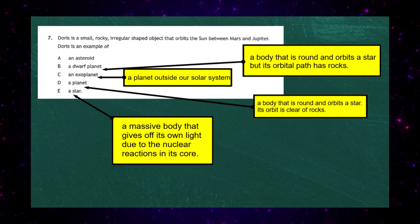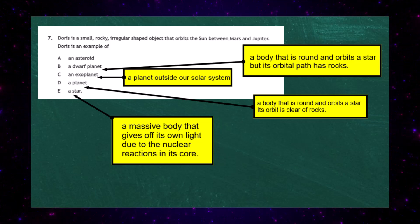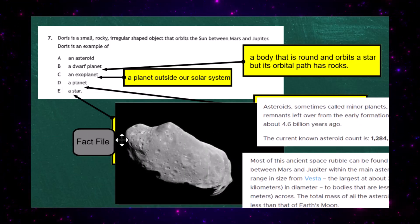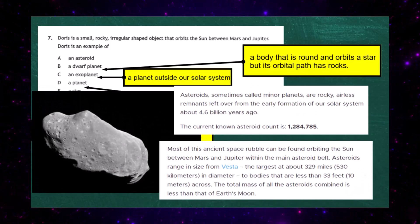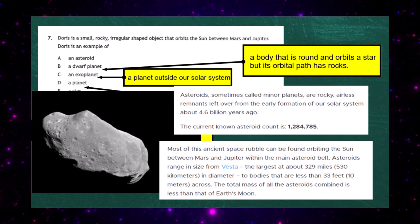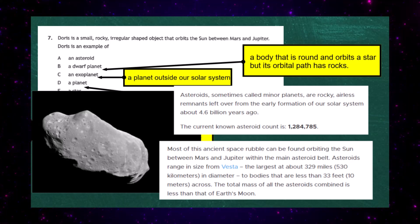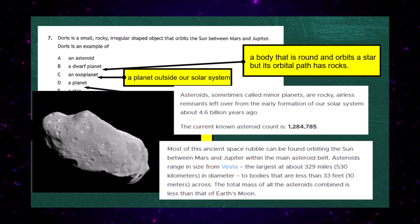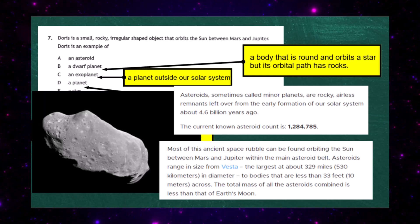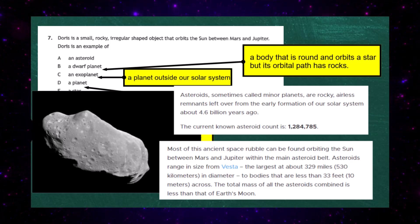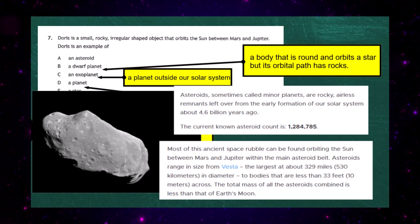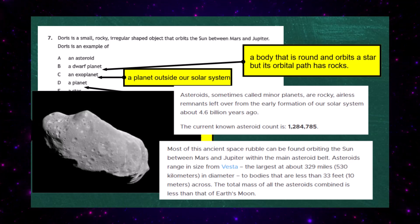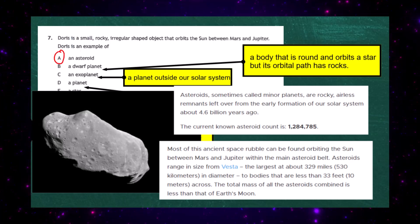That leaves us with just one response: an asteroid. Doris is in fact an asteroid. Looking at the NASA fact file, an asteroid — sometimes called a minor planet — is a rocky, airless remnant left over from the early formation of the solar system about 4.6 billion years ago. Most of this ancient space rubble orbits the sun between Mars and Jupiter. So the correct response for question 7 is A: Doris is an asteroid.